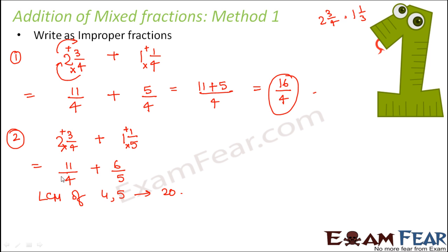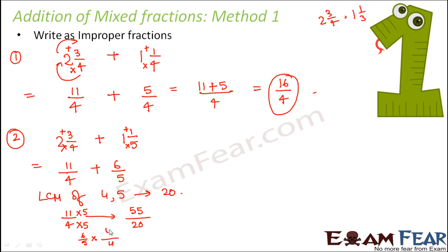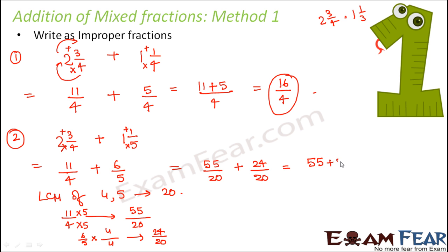Once we have the LCM, we convert each fraction into an equivalent fraction with denominator 20. For 11/4, multiply numerator and denominator by 5 to get 55/20. For 6/5, multiply by 4 to get 24/20. Now 55/20 + 24/20 = 79/20. So 79/20 is the sum of these two mixed fractions.